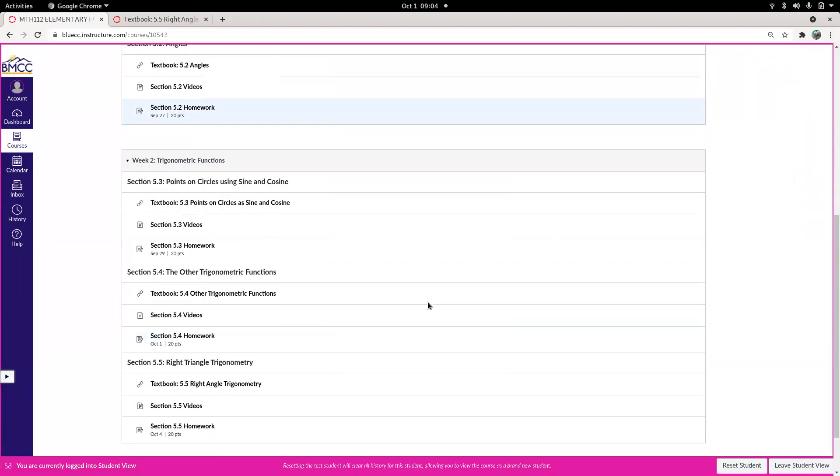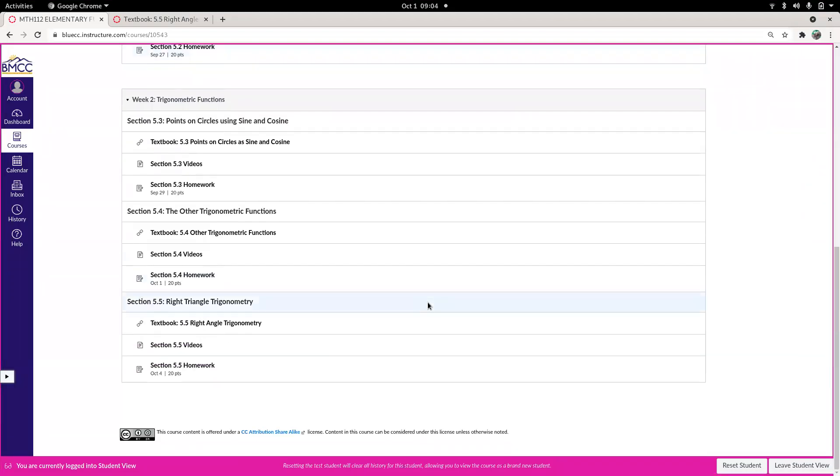So we are finishing up week two, and I'm going to do a review of sections one through four right now, and then we're going to jump into section five, right-angle trigonometry, which we've really already been doing. It's just a slightly different way to describe trig functions, but it's equivalent.